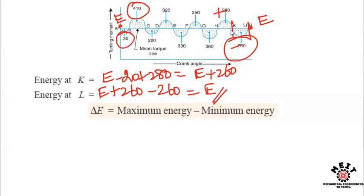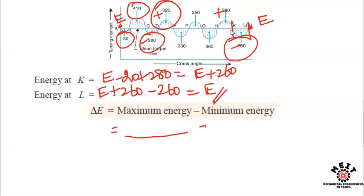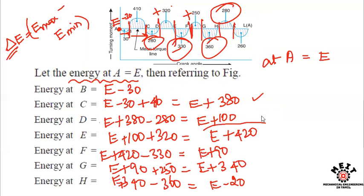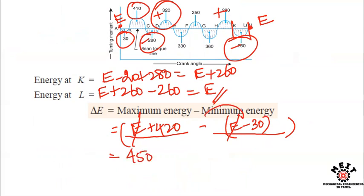From the energy values at each point, the maximum energy is E plus 420 and the minimum energy is E minus 30. Therefore, the fluctuation of energy ΔE equals (E plus 420) minus (E minus 30), the E values cancel, giving ΔE equal to 450 square millimeters.